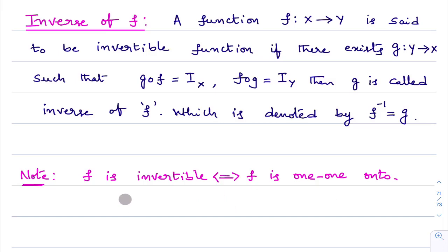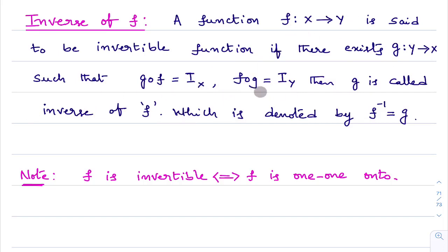What we learned: the definition of inverse of a function — f from X to Y is invertible if there exists g from Y to X such that g∘f = iX and f∘g = iY, then g is inverse of f. Now we will move to the theorem.